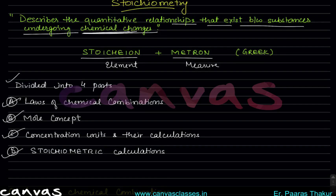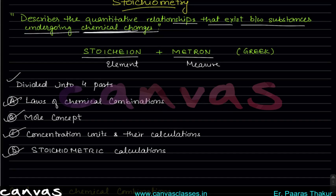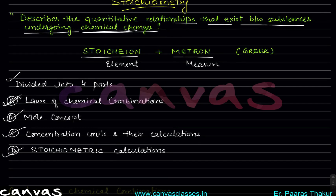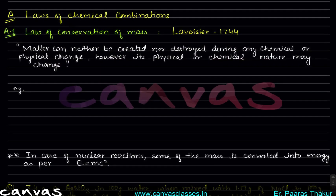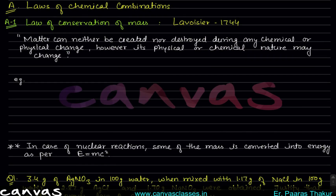Hello everyone, let us continue with our second lesson of stoichiometry. We will first study the laws of chemical combinations. In laws of chemical combinations, the first is the law of conservation of mass.